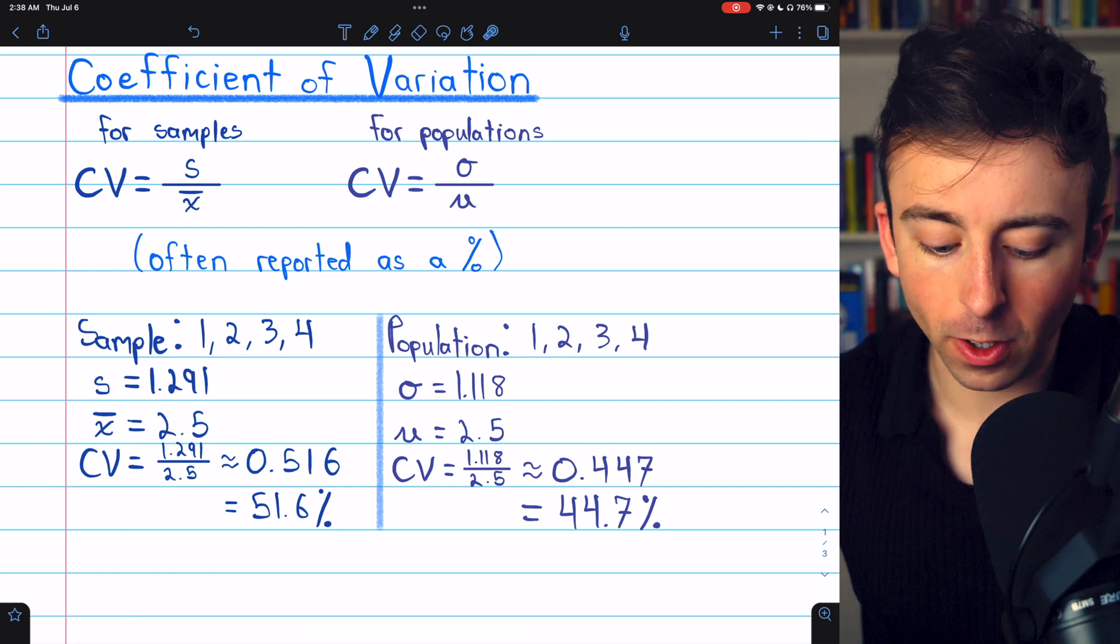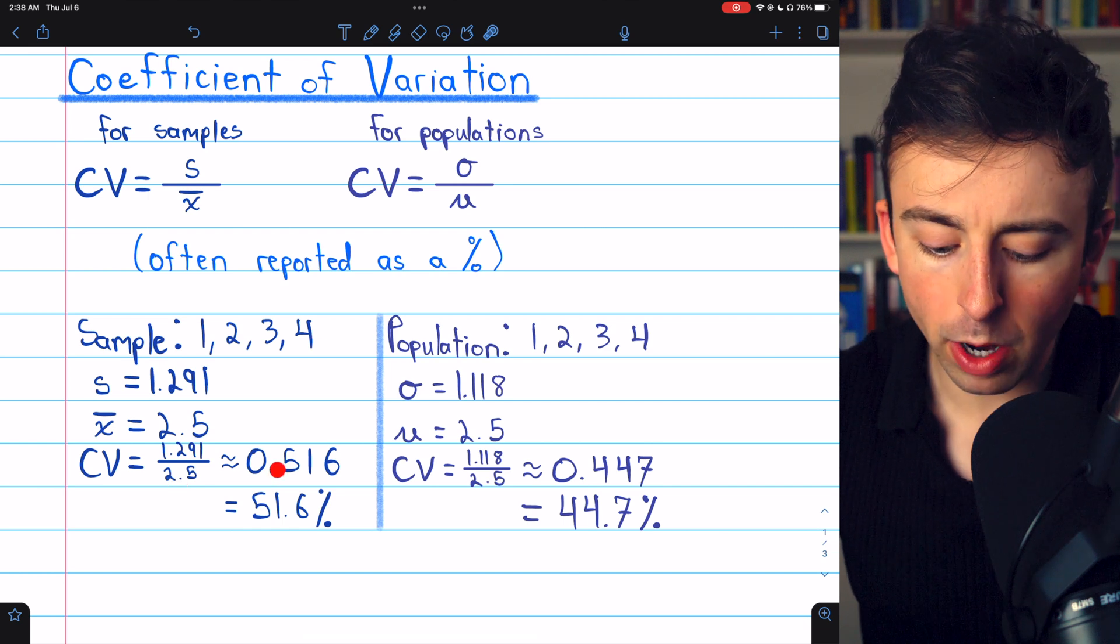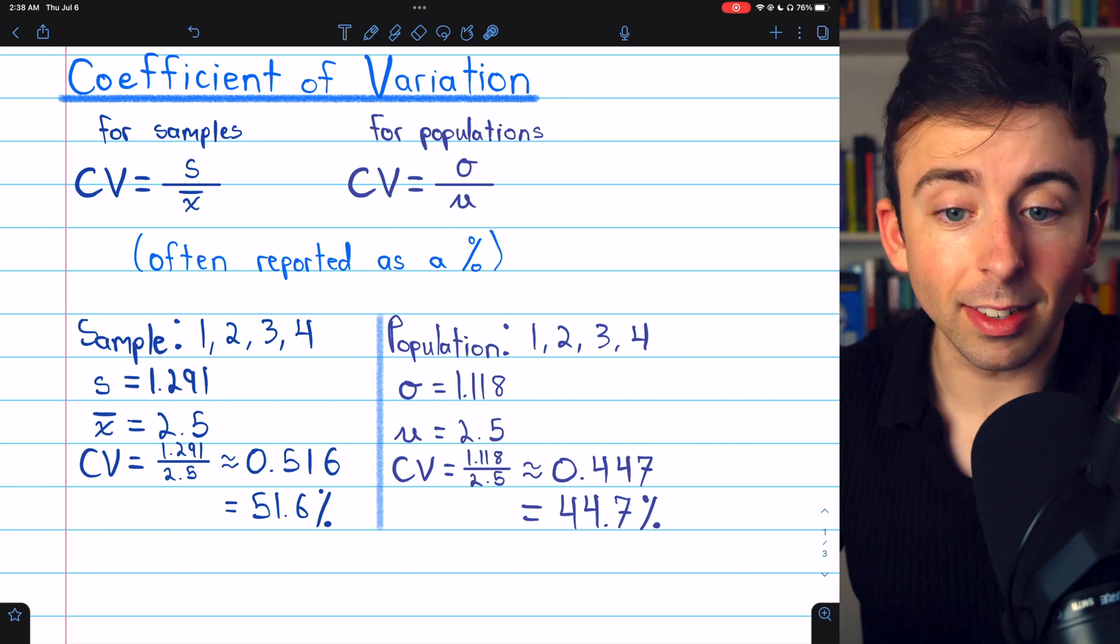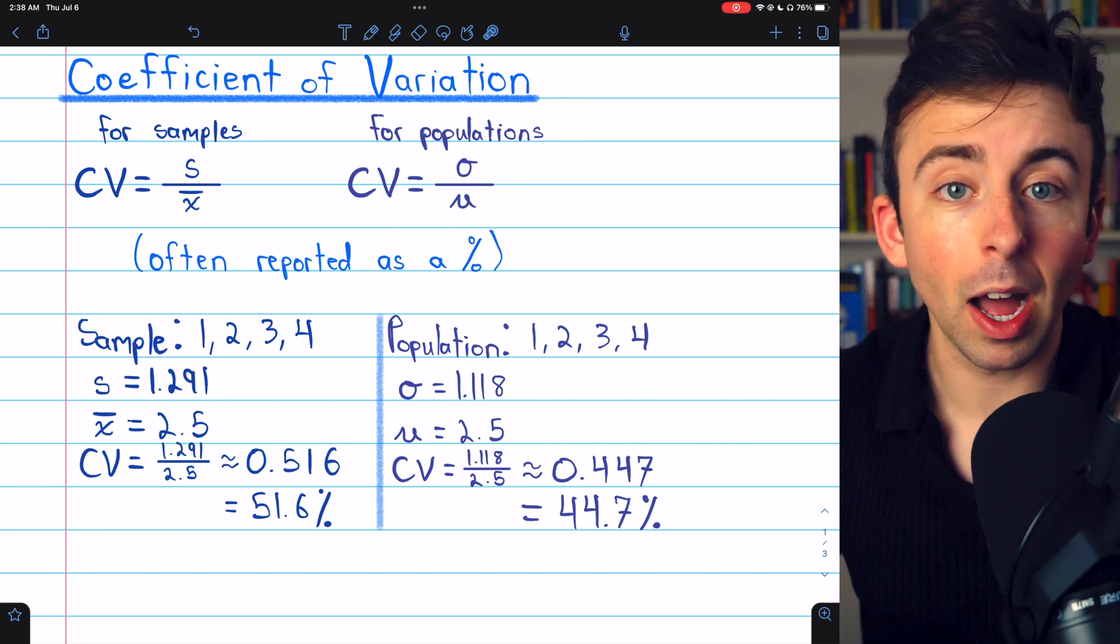Thus, the coefficient of variation, the standard deviation divided by the mean, is about 0.516, or 51.6%.